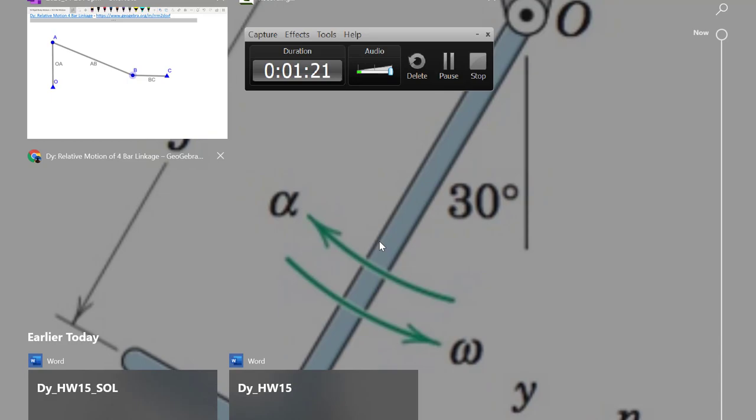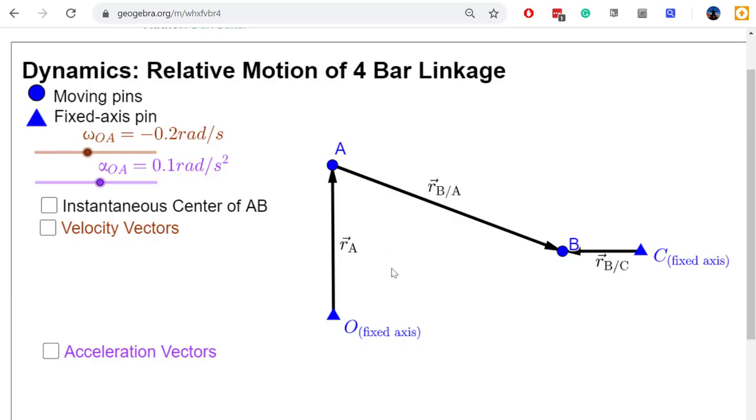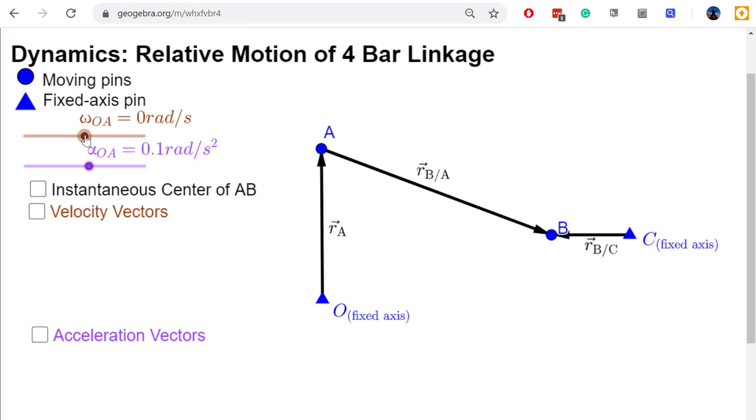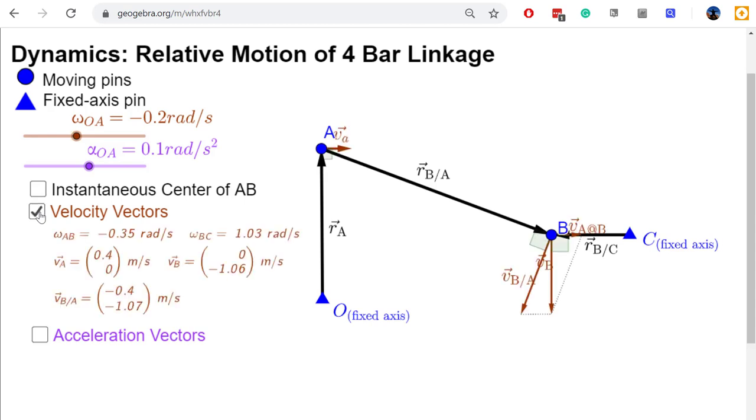So the second view that we could look at actually has some vectors built into it. This is another interactive. I'll post all of these links in the notes at the bottom of the video. So this one now has the links drawn as position vectors. Position vector R of A, here's R of B relative to A, and here's R of B relative to C. Now, in this interactive, it's going to work in generally the same way. We're able to actually change the magnitude of the angular velocity, and so I'm going to set this to be kind of a small value in the negative direction, so matching that negative omega of OA that we had for our initial. So I'm going to go ahead and click this box here to look at the velocity vectors, and I'll walk through them one at a time.